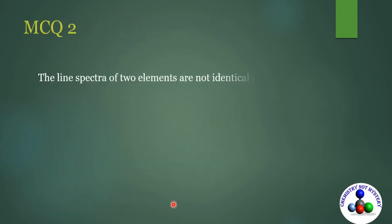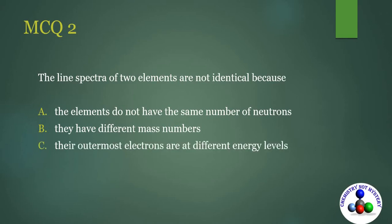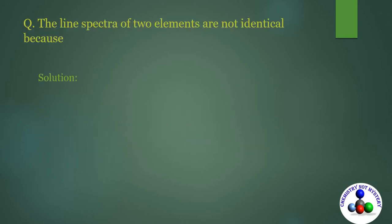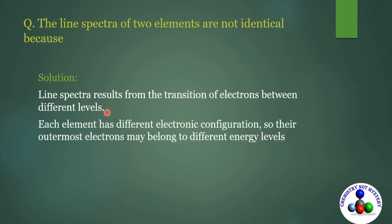Question 2: The line spectra of two elements are not identical because — (A) the elements do not have the same number of neutrons, (B) they have different mass numbers, (C) their outermost electrons are at different energy levels, or (D) all of the above. Line spectra result from electron transitions between different levels, and each element has a different electronic configuration, so their outermost electrons may belong to different energy levels. That's why C is the correct option.